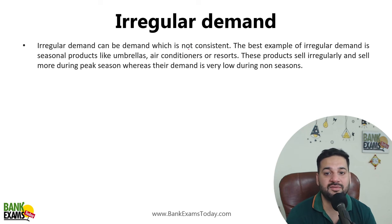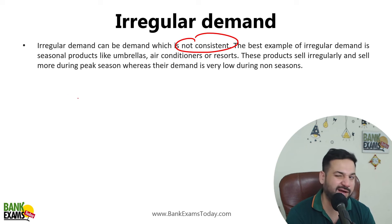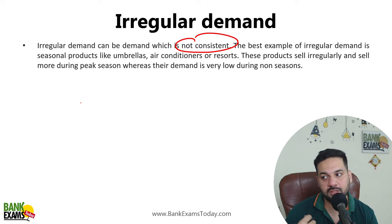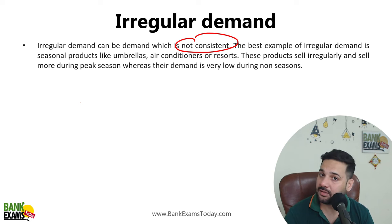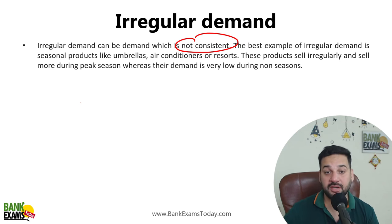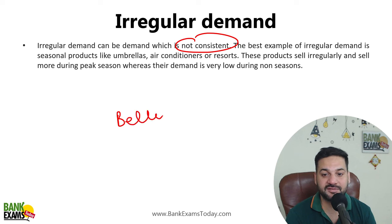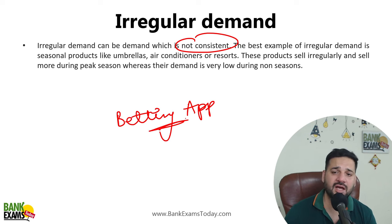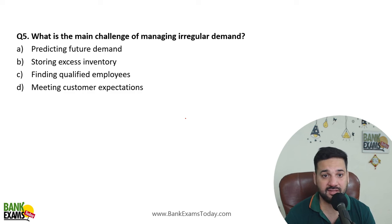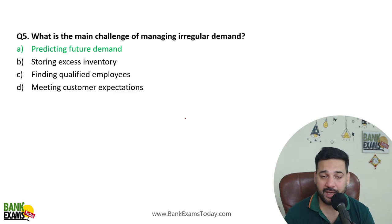Irregular demand is demand which is not consistent. For example, the demand for firecrackers, colors during Holi, or umbrellas — their demands are irregular. Demand for cricket jerseys happens when cricket is on. Demand for betting apps like Dream11 happens during the IPL season or World Cup. So the main challenge in case of irregular demand is predicting the future demand.